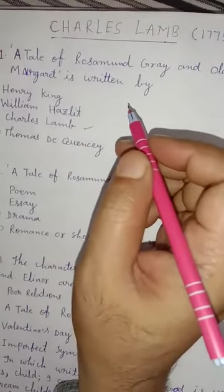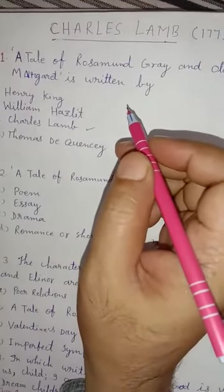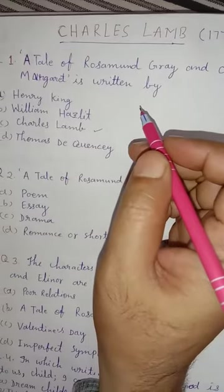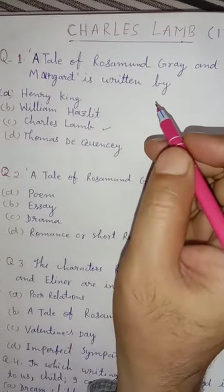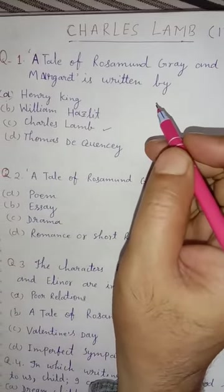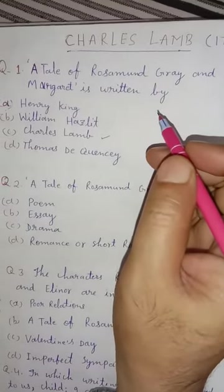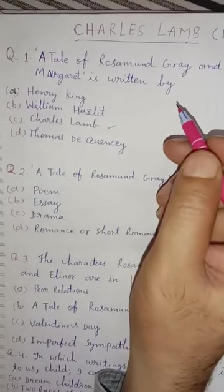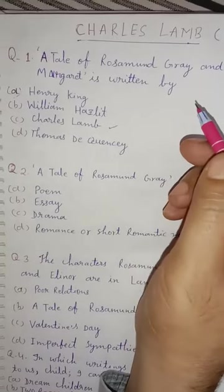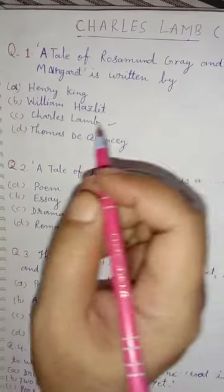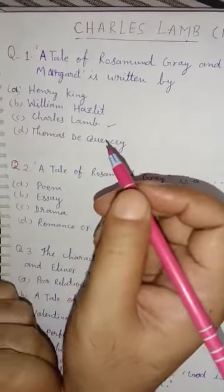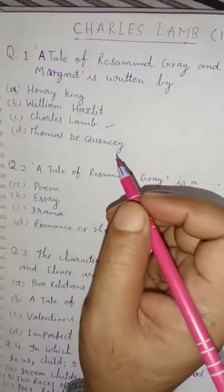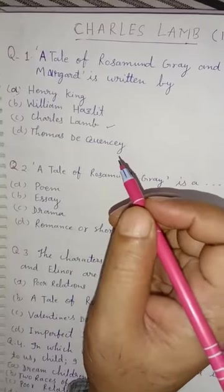Today I am with my new video on Charles Lamb, who was born in 1775 and died in 1834. This is for TGT and PGT and other competitive exams.